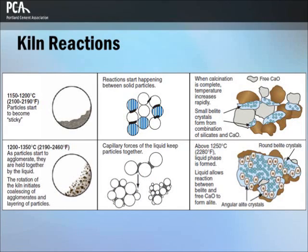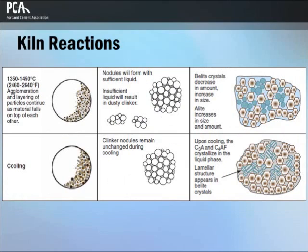Next, the material becomes sticky and the temperature increases rapidly. Once the mixture reaches 1250 degrees Celsius (2280 degrees Fahrenheit), the liquid phase forms and the free calcium oxide and the expanding crystals of belite form a new phase, C3S, also called alite. At peak temperatures between 1350 and 1450 degrees Celsius (2460 to 2640 degrees Fahrenheit), the C2S continues to react with the free lime to form more alite. Additionally, nodules form as the liquid agglomerates crystals together, forming clinker.